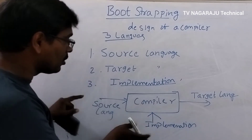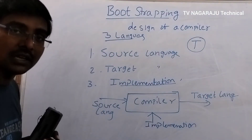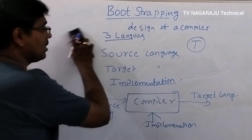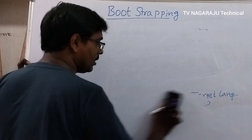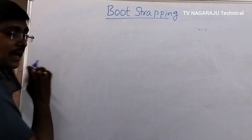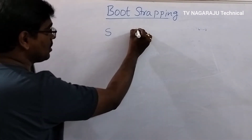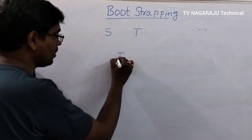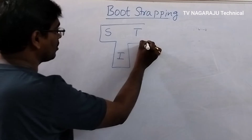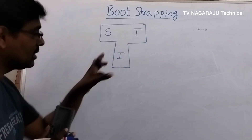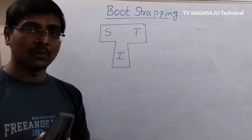This process is represented by using T-diagrams. The characterization of a compiler in terms of three languages — source language, target language, and implementation language — is represented in a T-diagram structure. That is the T-diagram of a compiler.